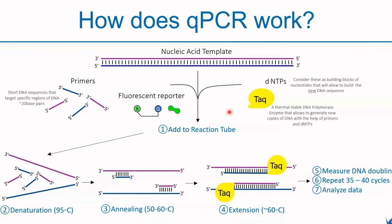In QPCR, we need to add five materials into a reaction tube. These five materials are: firstly, nucleic acid template; second, primers; third, fluorescence reporter; and then dNTPs and Taq polymerase. Nucleic acid template is what you get from your sample, serving as a template in QPCR where you want to detect and quantitate the expression from it. Primer is a short DNA sequence that targets specific regions of the nucleic acid template.